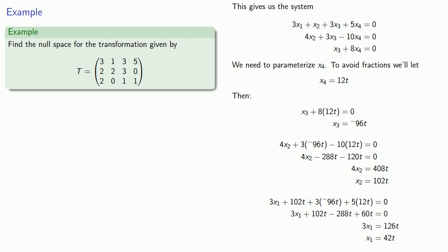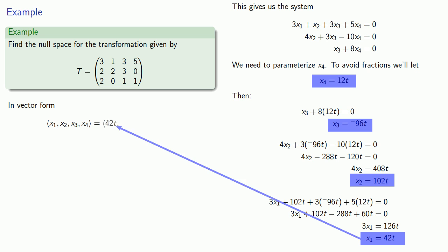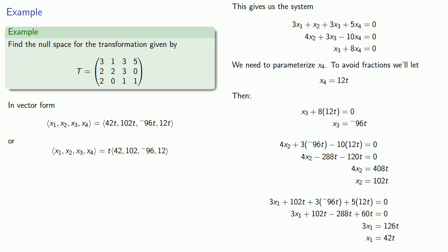Remember that this transformation took vectors in R⁴ and sent them to vectors in R³. So the components of our vectors are going to be 42t, 102t, -96t, and 12t. Our null space is going to consist of all vectors with these components, and we can express that as some scalar multiple of some basic vector.